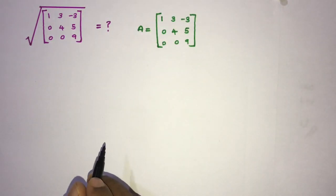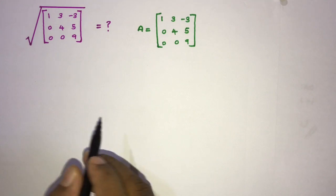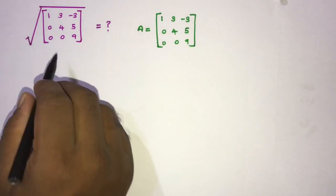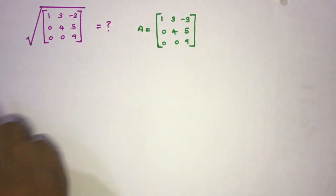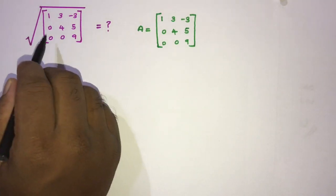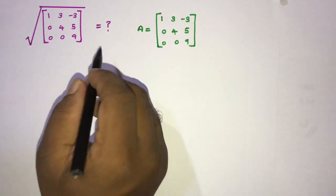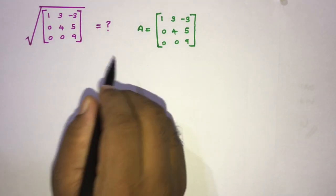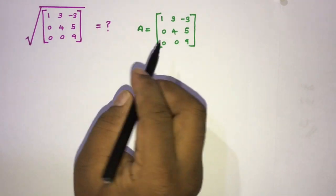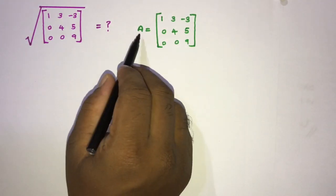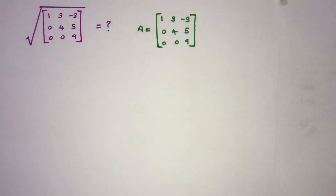Welcome to the Mathematics channel. Today we are going to solve another interesting question. This question was a Berkeley qualifying question from the University of California. The question is: how many square roots does this matrix have, and also find a square root of this matrix. We can take A equal to this matrix.